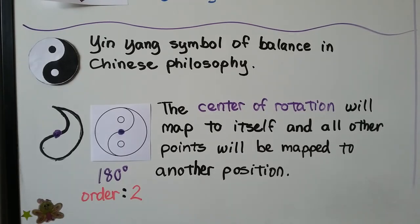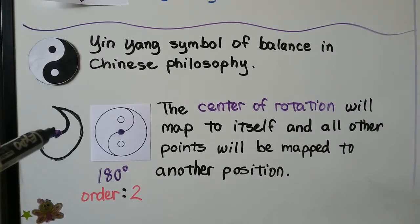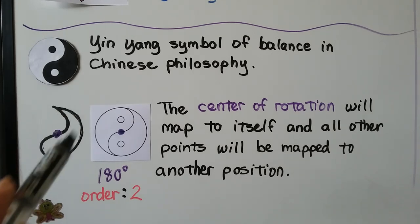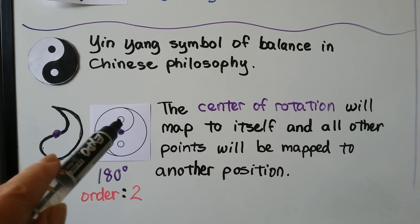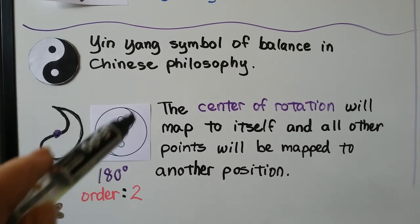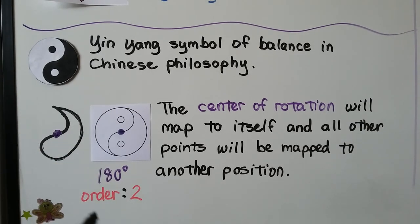Yin and Yang's symbol of balance in Chinese philosophy — if this were our center of rotation right here, the center of rotation will map to itself and all other points will be mapped to another position. So we could flip this around 180 degrees and it would make this symbol — we could just color in one of the sides black. That's an order of two.